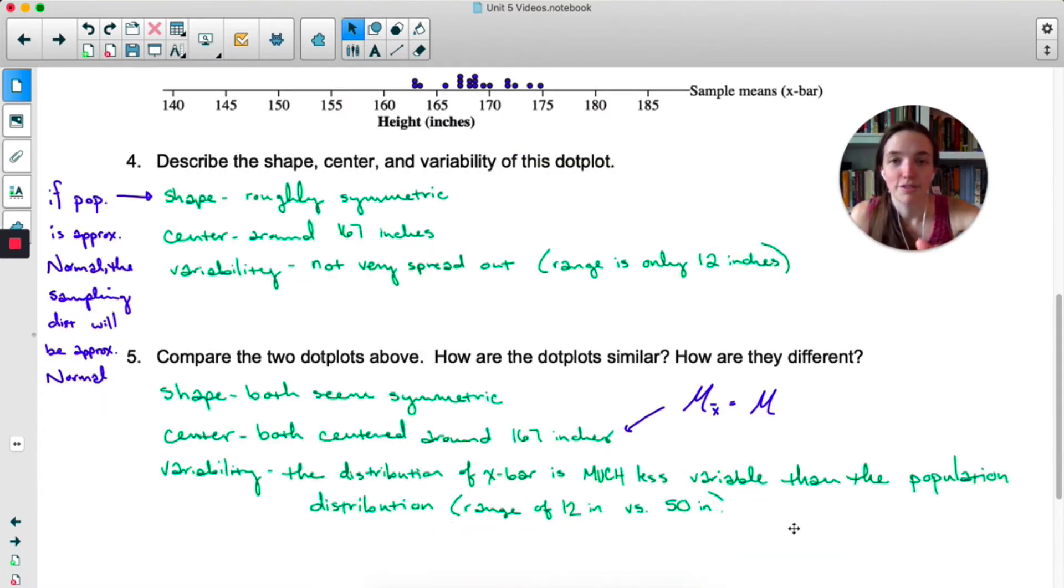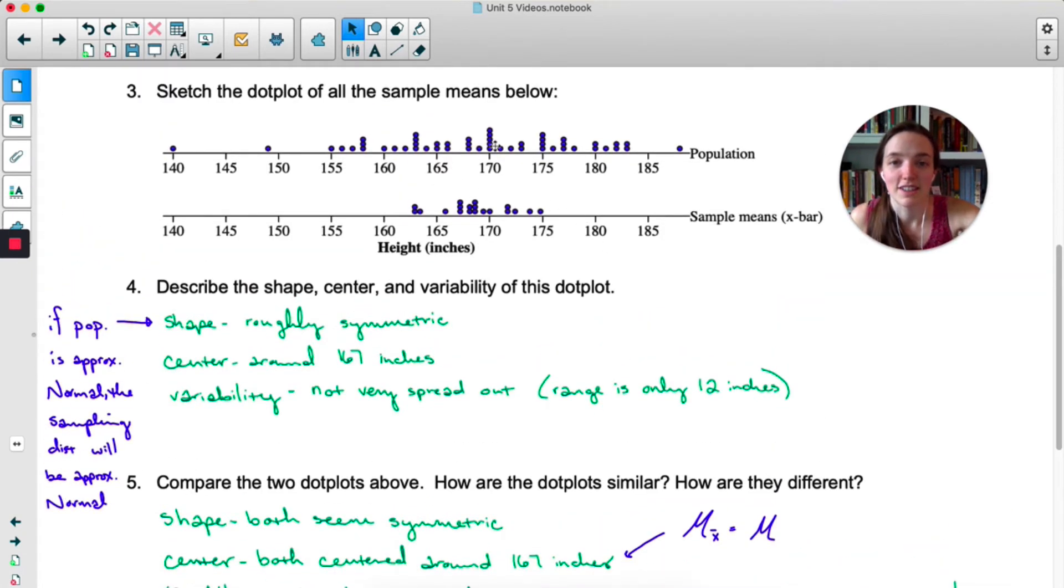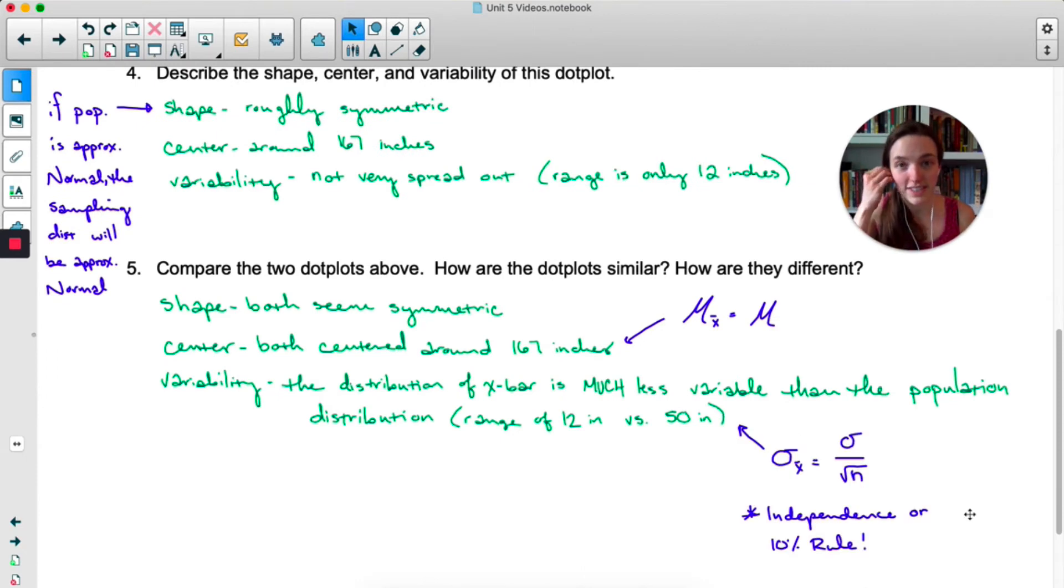And for variability, we notice that the variability is much less in the sampling distribution. So the standard deviation of the sampling distribution of x-bar is the standard deviation of the whole population over root n. Now you can only use this formula if you have independence or if you have the 10% rule, just like with proportions.